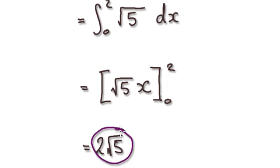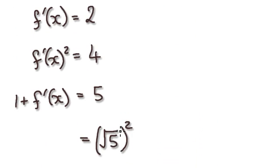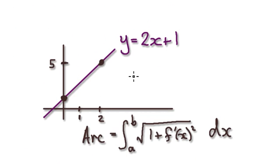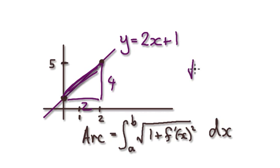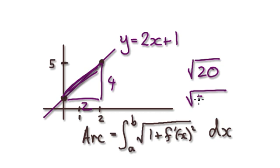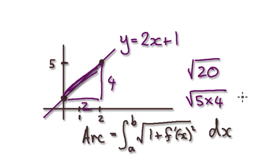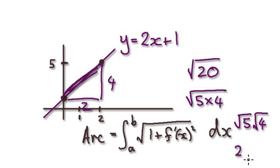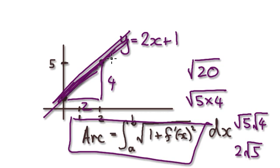Now let's check that it's consistent with Pythagoras. Earlier we worked out that using Pythagoras, this side is 4 and this side is 2, so the length was √20. We can rewrite √20 as √(5 × 4), and then break it apart: √5 times √4, and √4 is 2. So it's 2√5 — the formula is consistent, even in the case of a straight line.